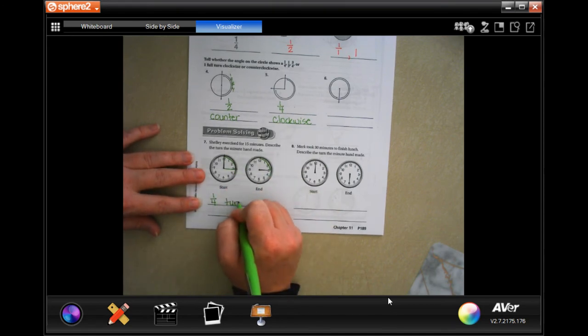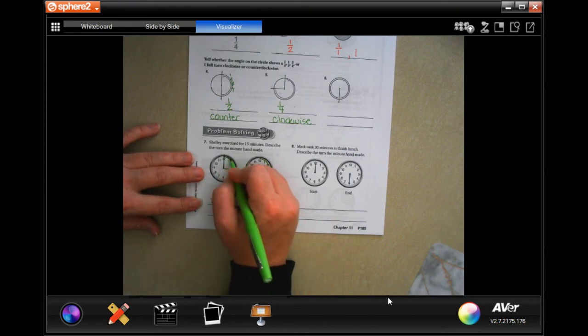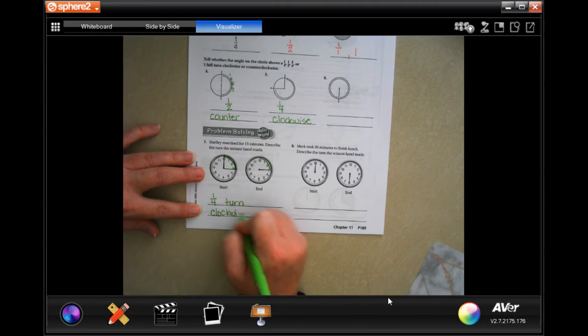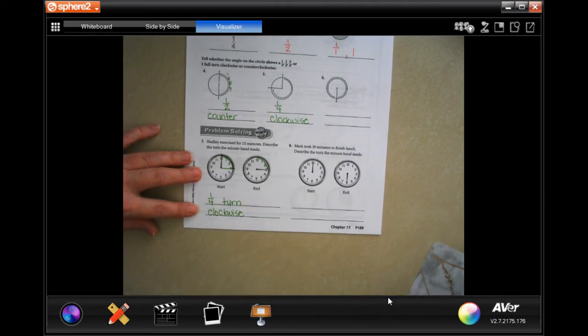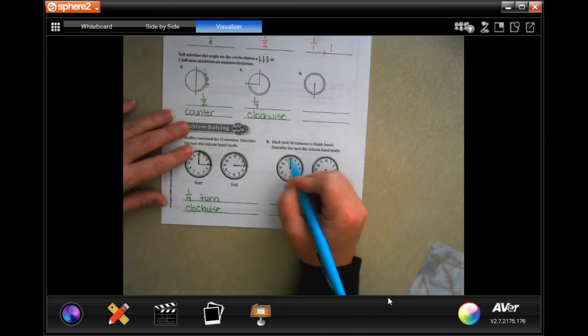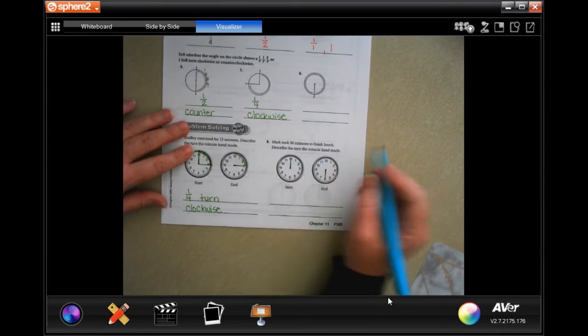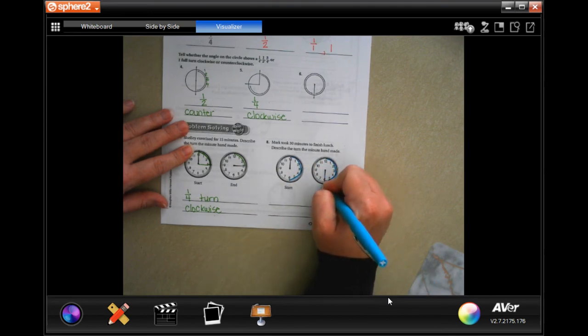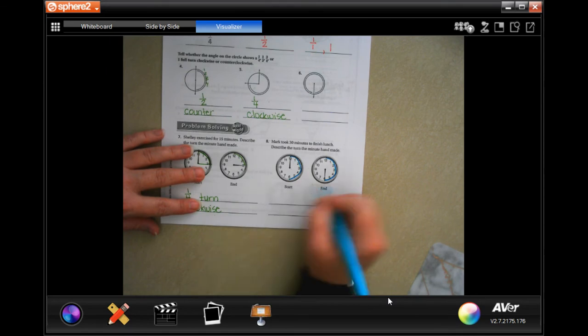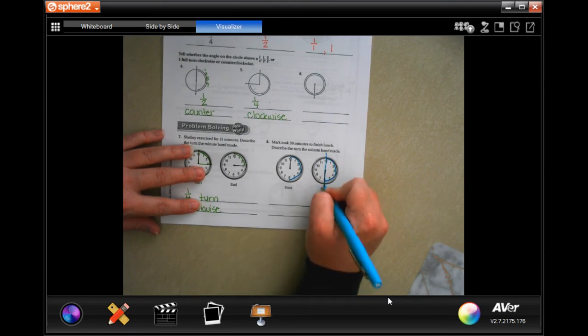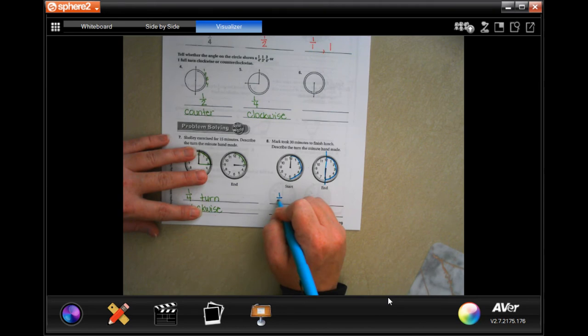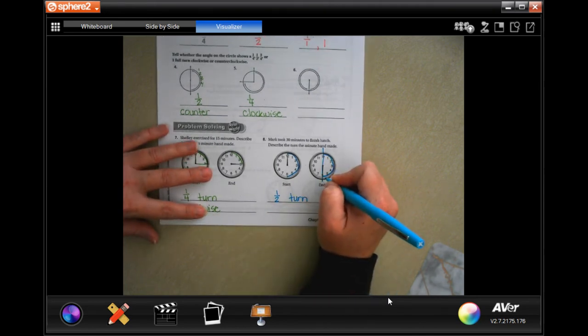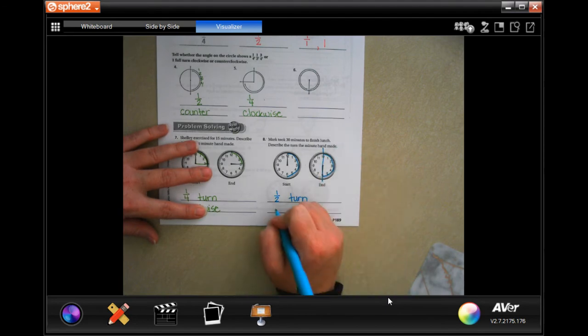Mari took 30 minutes to finish. Describe the turn the minute hand made. Well, it went from the 12 down to the 6, so it went halfway around the circle. It would cut it in half, so it went half turn, and again it went in the order of the numbers, so still going to be clockwise.